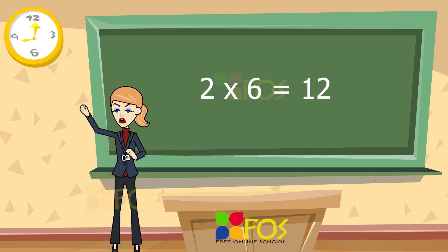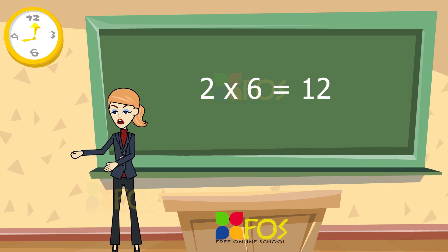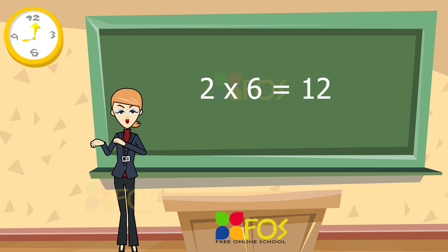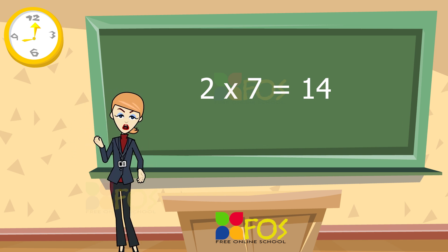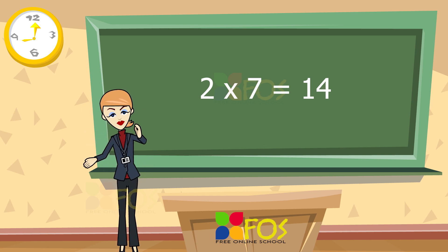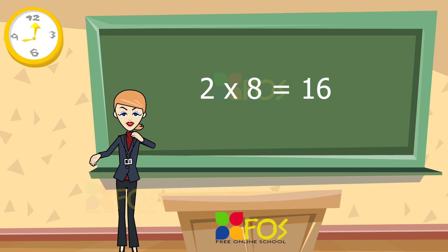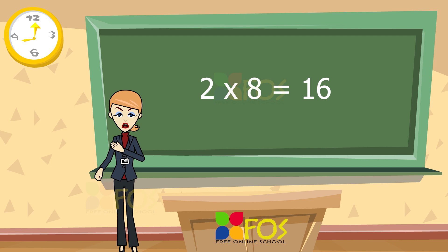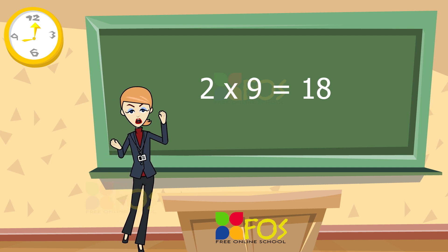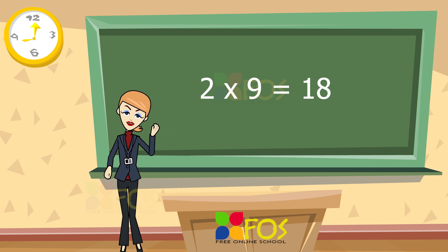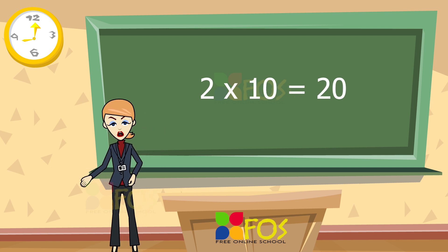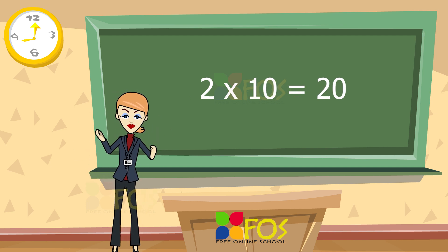Two sixes are twelve. Two sevens are fourteen. Two eights are sixteen. Two nines are eighteen. Two tens are twenty.